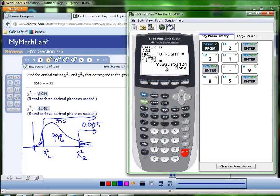So we have 8.033653424. That rounds off to three decimal places, 8.034. So that looks like it's right.